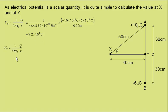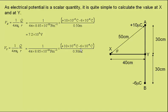At Y, we use the same formula, but now the separation is 0.3 metres. Again, the negative charge needs to be subtracted from the positive. This gives a potential at Y of 1.2 times 10 to the 5 volts.